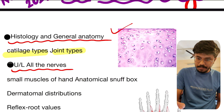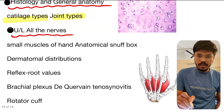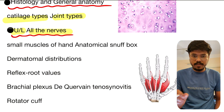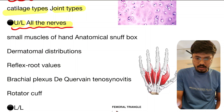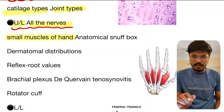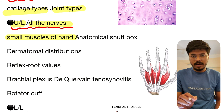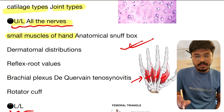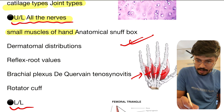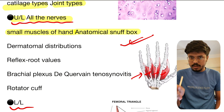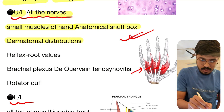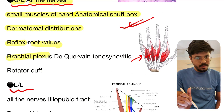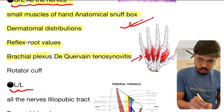This is a picture of hyaline cartilage. From the upper limb, all the nerves are important: median nerve, radial nerve, ulnar nerve, musculocutaneous nerve. Small muscles of the hand — lumbricals, palmar interossei, dorsal interossei — all small muscles of the hand are important. This is the lumbricals muscle. Anatomical snuffbox, boundaries, dermatomal distributions, reflex root values are extremely important. Brachial plexus is important. De Quervain's tenosynovitis and rotator cuff are also key topics.